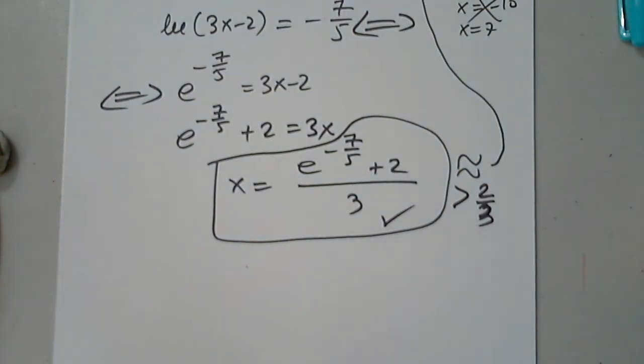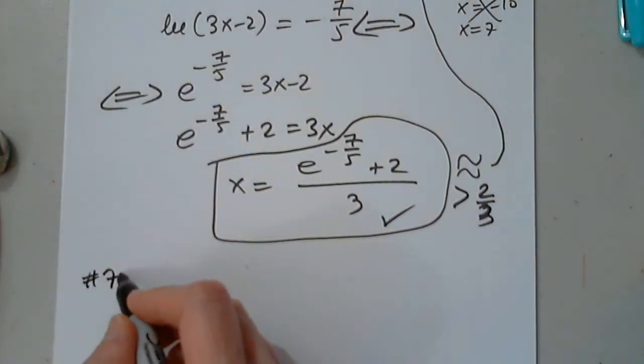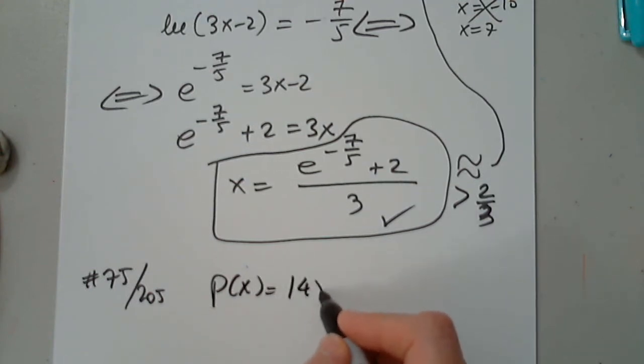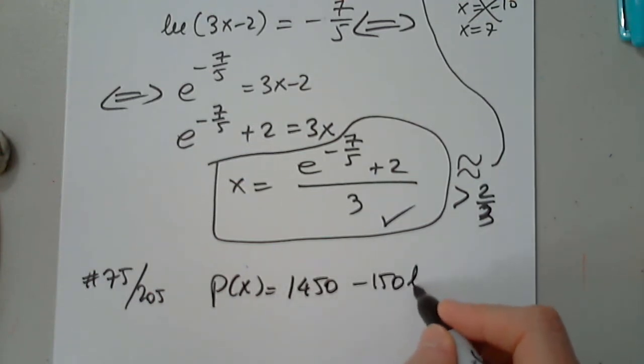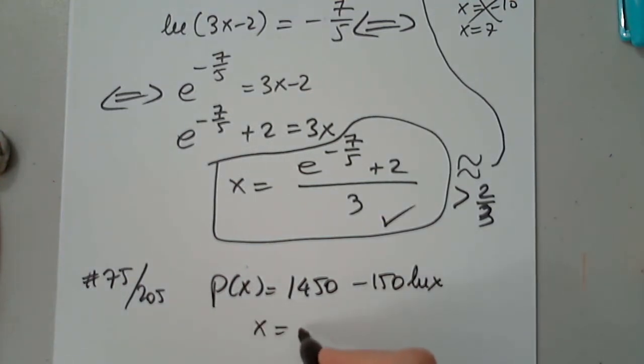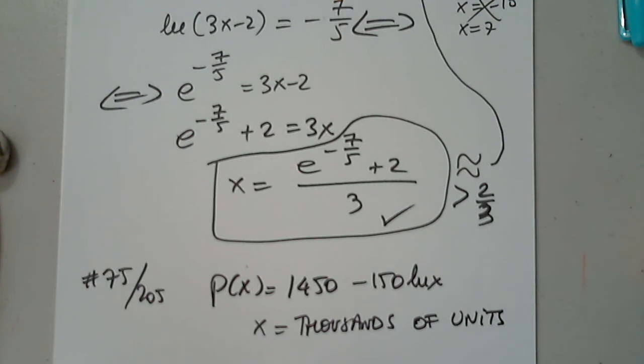So I have the price in dollars per unit with a consumer willing to pay. So this is 75 on 205. Okay, our popular high-end digital camera is given by p of x equals 1450 minus 150 natural log x. Where x is in thousands of units. Thousands of units. x, thousands of units. Fine. And the price is in dollars. Fine. Where x is. Good.